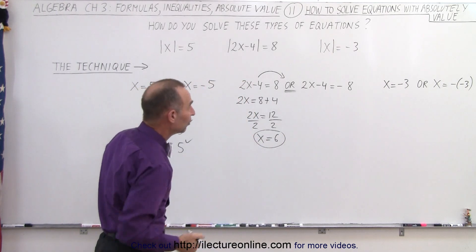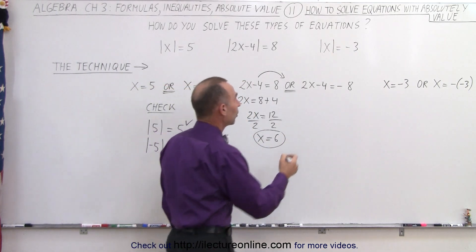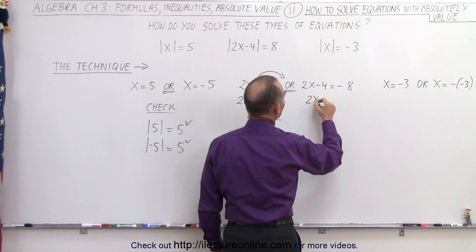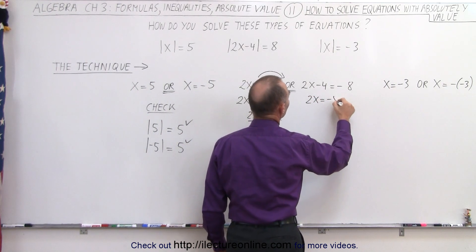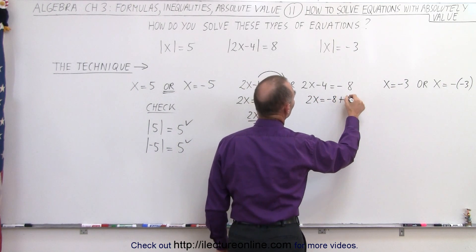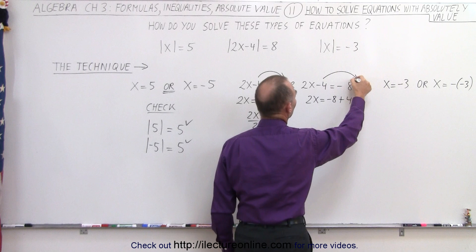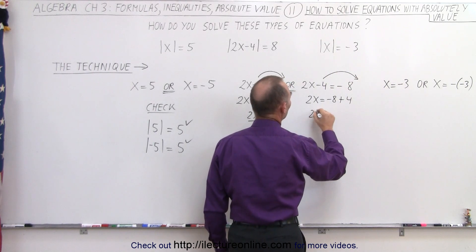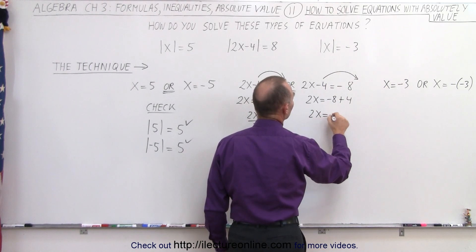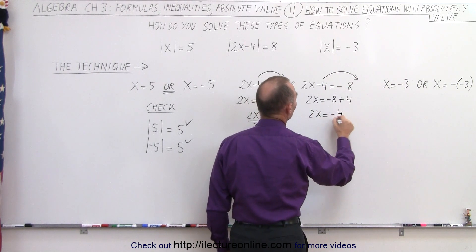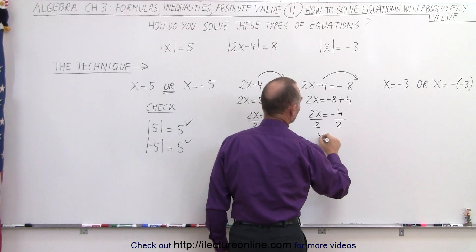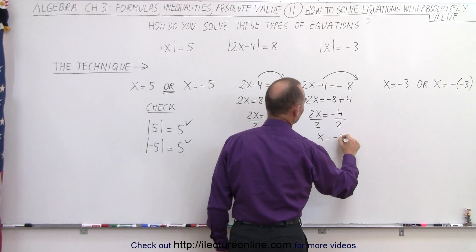We do the same for the other equation. We have 2x equals negative 8 plus 4 — when we bring the negative 4 across, it becomes a positive 4. So 2x equals negative 4. Divide both sides by 2, and we get x is equal to negative 2.